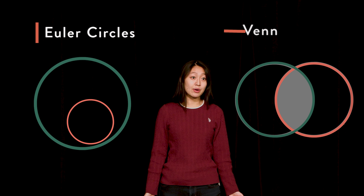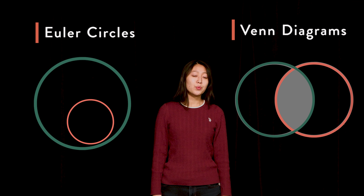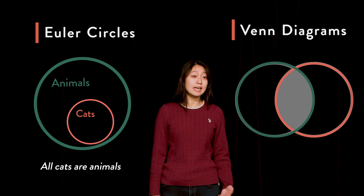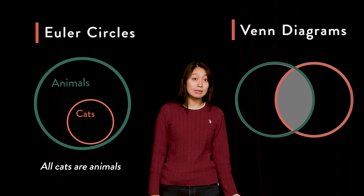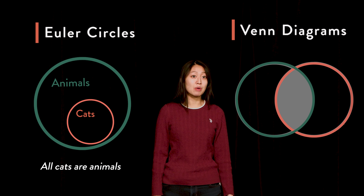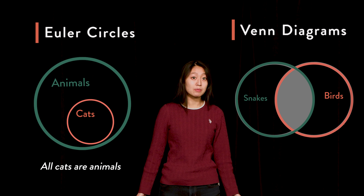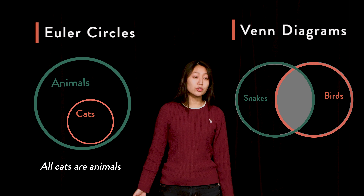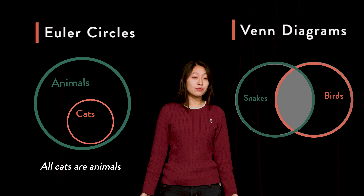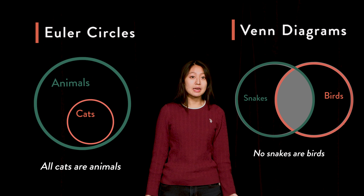To get a better sense of how Universal Affirmative and Negative propositions compare to one another, it can be helpful to visualize them using Euler circles and Venn diagrams. In Euler circles, we look to spatial relations to understand the propositions. On the left, the circle labeled 'cat' is included in the circle labeled 'animal,' representing the Universal Affirmative 'all cats are animals.' On the right, there is no overlapping part between the circle labeled 'snake' and the circle labeled 'bird,' representing the Universal Negative 'no snakes are birds.'